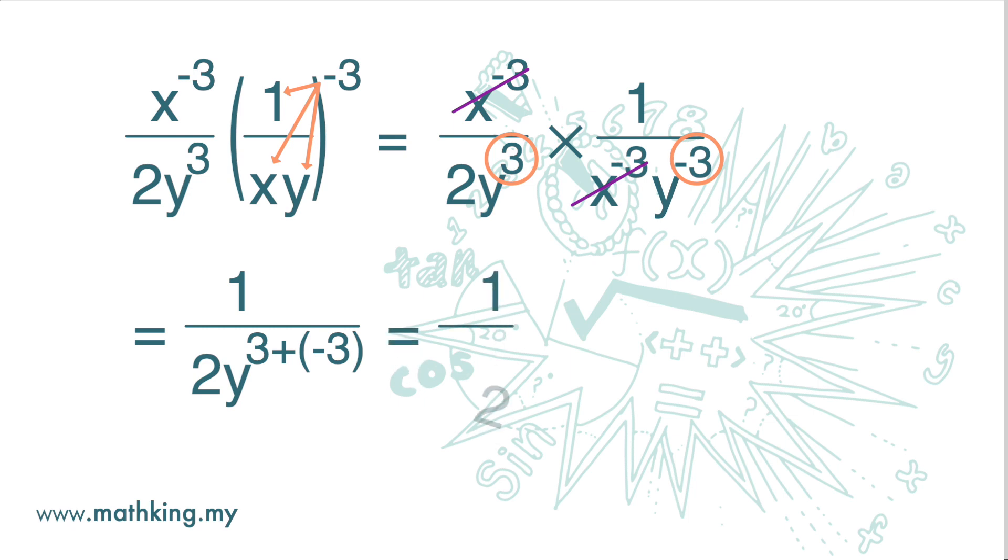And we get y to the power of negative 3. Now remember that any number to the power of 0, we get 1. So the answer is 1 over 2.